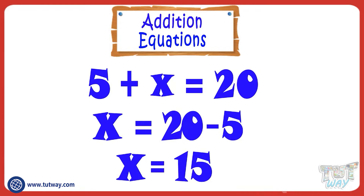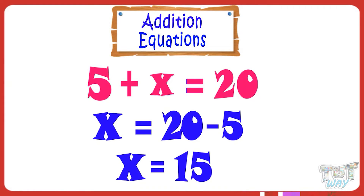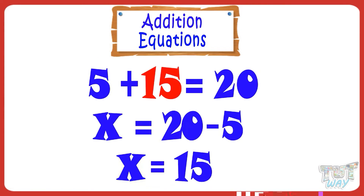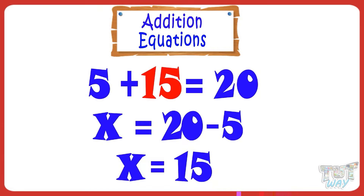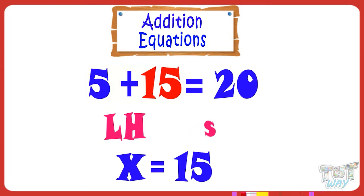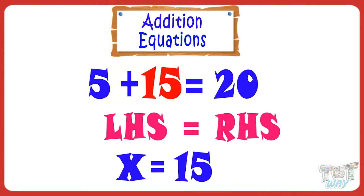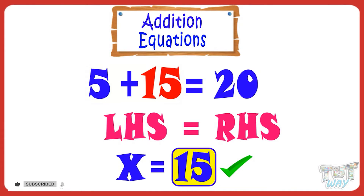Now you can cross-check your answer by putting the value of X in the original equation. Our original equation is 5 plus X equals 20. Putting the value of X we just found, which is 15: 5 plus 15 equals 20. LHS equals RHS. Hence, we proved the value of X we found is correct.